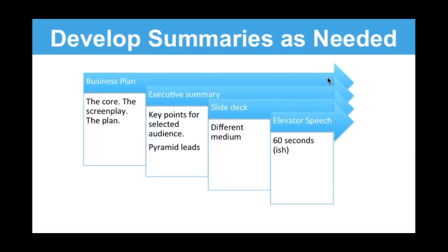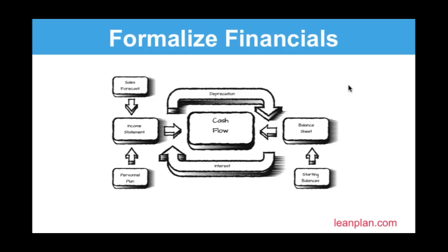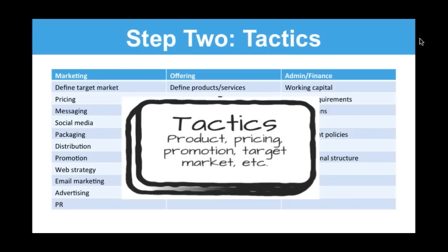Step two: tactics. Think about strategy and tactics. The PhDs can take forever talking about which is which, but we're business owners. What you feel is strategy and tactics is right — you're the owner, you're responsible. Strategy is the focus. Tactics are about execution.